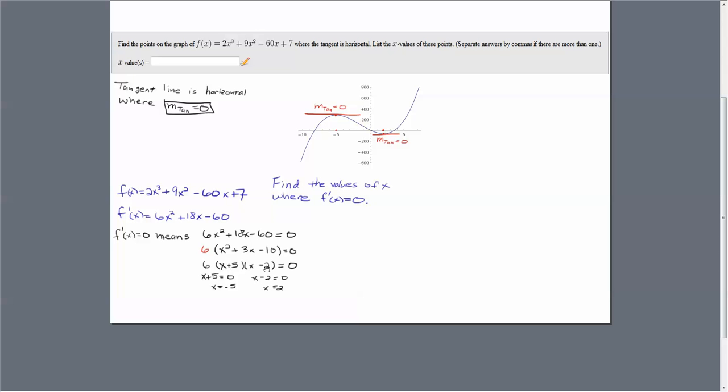We factor it and get (x + 5)(x - 2) = 0. Then we set each factor equal to zero: x + 5 = 0 or x - 2 = 0. Solving that gives us x = -5 or x = 2.